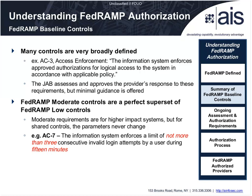FedRAMP moderate controls are a superset of FedRAMP low controls — every low requirement is in moderate, though some are more strict. One well-defined example: AC-7 requires the information system enforce a limit of not more than three consecutive invalid login attempts by a user during 15 minutes. In other cases where requirements are broadly defined, you will need to consult the documentation.